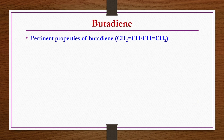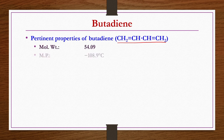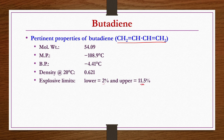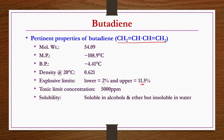Butadiene has the structure CH2=CH–CH=CH2. Its pertinent properties: molecular weight is 54.09, melting point is −108.9°C, boiling point is −4.41°C, density at 20°C is 0.621 g/cc. Explosive limits: lower and upper limits are 2 and 11.5 percent respectively; toxic limit is 5000 ppm. It is soluble in alcohols and ether but not soluble in water, which is why it is mostly used to make rubber.